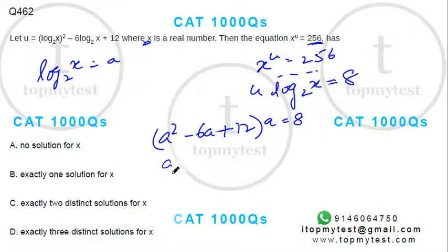So if we rewrite this, you'll have a³ minus 6a² plus 12a minus 8 equals 0.